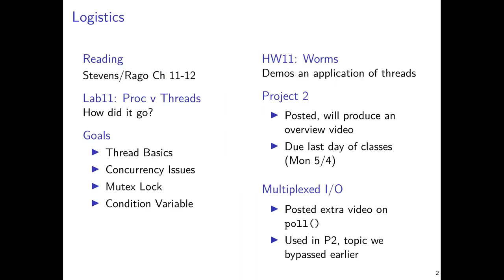A few logistics items before we get underway. The reading you'll probably want to be doing is in Stevens and Rago's chapters 11 and 12. This has pretty good coverage of the pthread basics along with some of the associated infrastructure, including things like mutexes and condition variables.